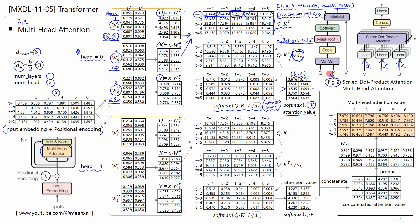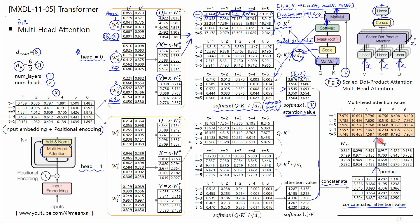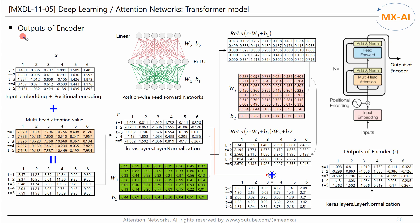Figure 2 in the paper shows this process. The left figure shows the scaled dot product attention process and the right figure shows the multi-head attention process. Q and K are multiplied, scaled, and softmax is applied. Then this result is multiplied by V — this output is the attention value. In this example, we use two heads. We concatenate the results from the two heads to get the concatenated attention value, then feed this into another linear projection layer. So this is the output of multi-head attention.